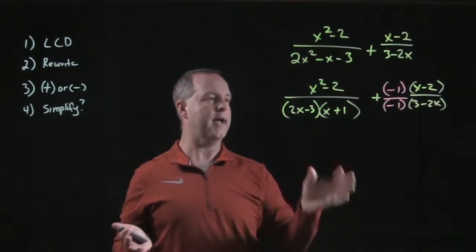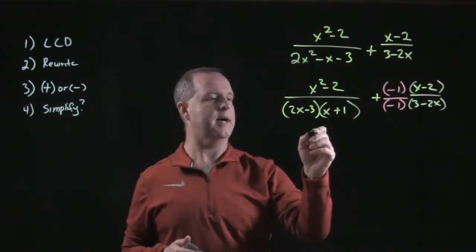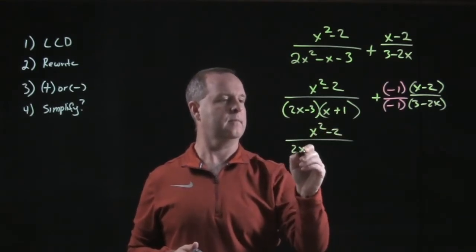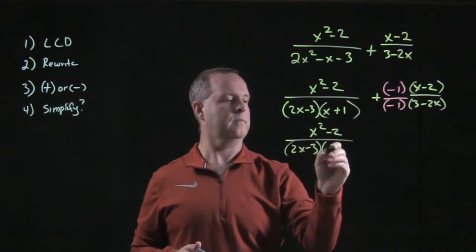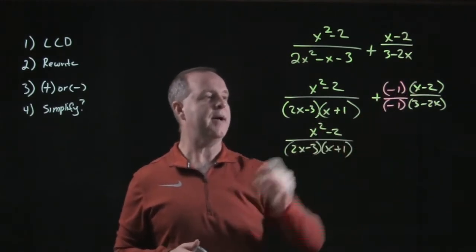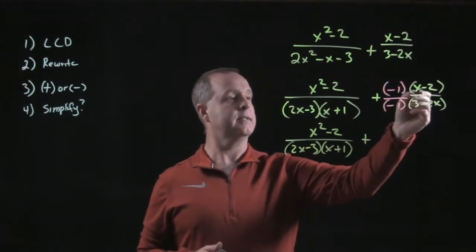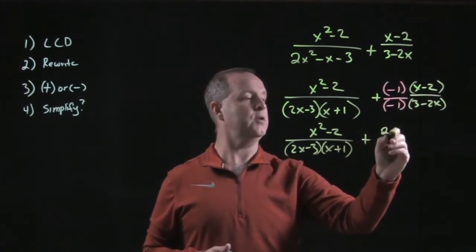From there we can clean this up. Multiply that negative 1 through gives me negative x plus 2, and I'm just going to rewrite it as 2.